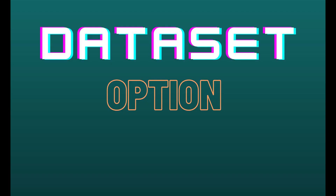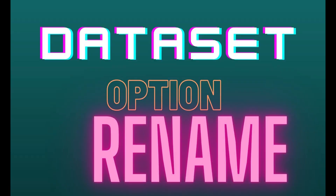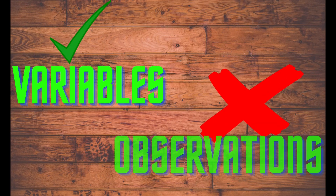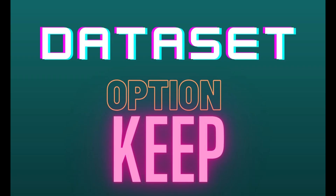In this session we are learning about dataset options: KEEP, DROP, and RENAME. KEEP is used to keep variables, DROP is used to drop variables, and RENAME is used to rename variables. By using dataset options we can only control variables, not observations.